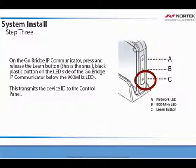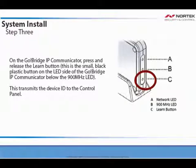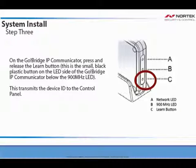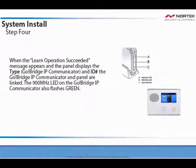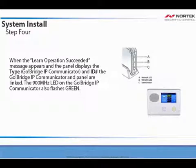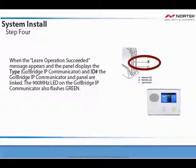On the GoBridge IP Communicator, press and release the Learn button. This is the small black plastic button on the LED side of the GoBridge IP Communicator, below the 900 MHz LED. This transmits the device ID to the Control Panel. When the Learn Operation Succeeded message appears and the panel displays the type and ID number, the GoBridge IP Communicator and the panel are linked. The 900 MHz LED will also flash green.